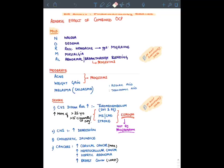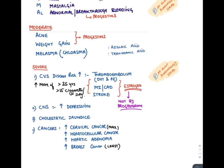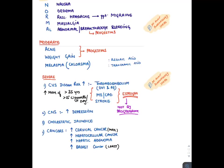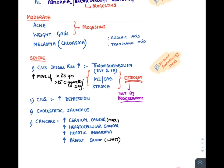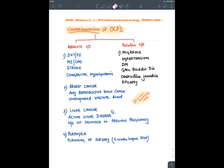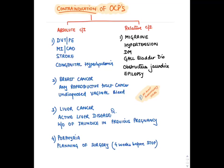Adverse effects of combined OCP: mild — nausea, edema, headache, mastalgia, breakthrough bleeding due to progesterone; moderate — acne, weight gain, melasma; severe — increased cardiovascular risk especially in women over 35 who smoke more than 15 cigarettes/day, leading to MI, stroke, and thromboembolism (due to estrogen component). They also cause depression, cholestatic jaundice, and cancers. Cancer risks increased by combined OCPs: cervical cancer (maximum), hepatocellular cancer, hepatic adenoma, and least increase in breast cancer.